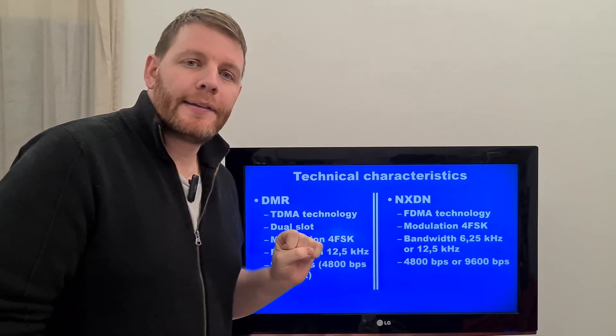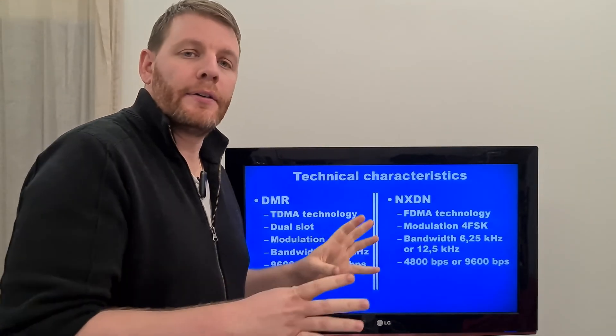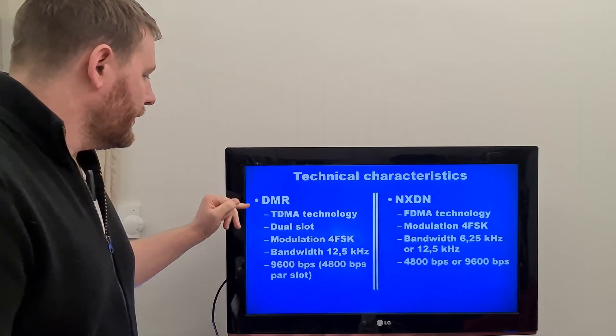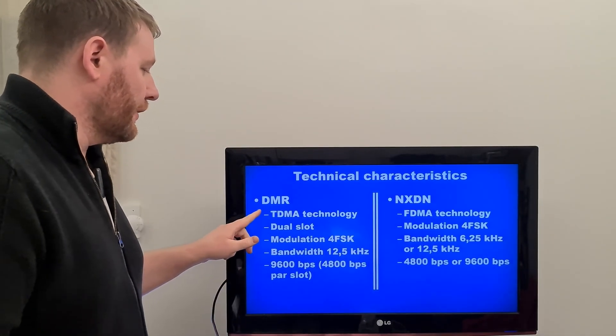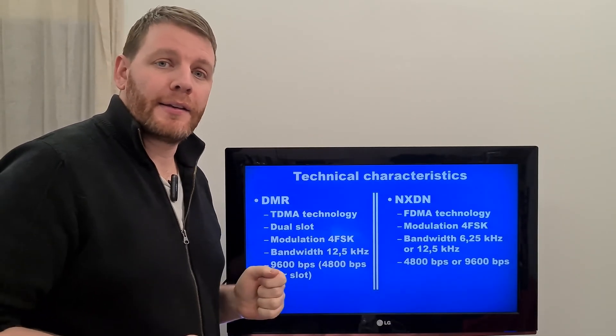First, let's compare DMR and NXDN. The DMR is a TDMA technology. We will see after what is TDMA technology. This is time division multiple access.